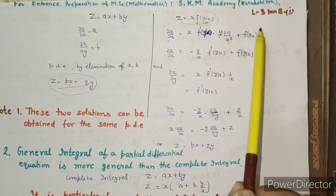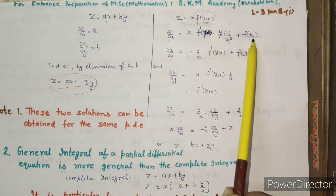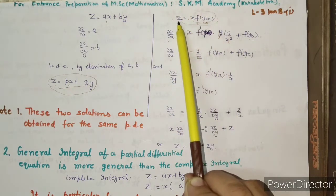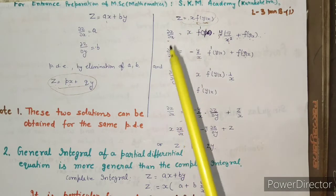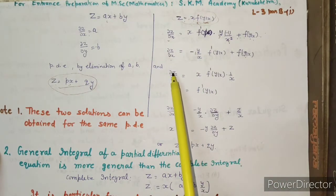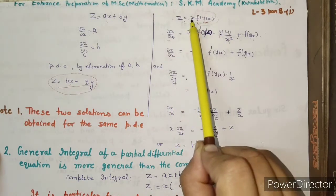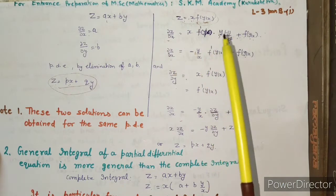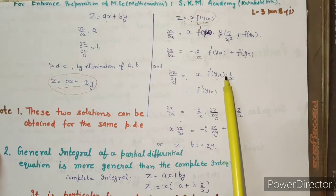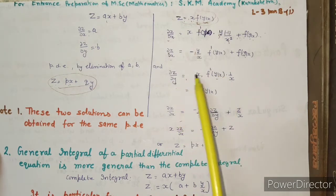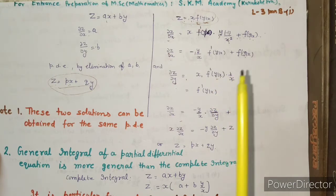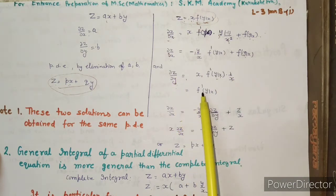Partially differentiating with respect to x: x is here, f derivative with respect to x, then f prime into the inside term, partially with respect to x — y is constant, so we get 1/x minus 1/x² type terms — plus f of y/x into the derivative of x which is 1. Then partially differentiating with respect to y: x is constant, differentiate f, so f dash of y/x, and the derivative of y/x with respect to y is 1/x. So curly z by curly y equals f dash(y/x) times 1/x, and x cancels, giving f dash(y/x).